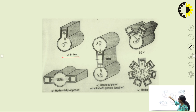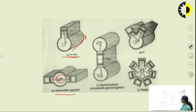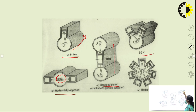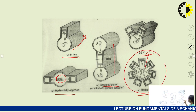In inline engines, a number of cylinders are arranged in a line. In a horizontally opposed engine, two pistons oppose each other horizontally. Vertically opposed pistons are arranged vertically. In a V engine, two cylinders are arranged making the shape of a V — we call it a V-shaped or V engine. In a radial engine, cylinders are arranged in a circle where each cylinder represents a radius of that circle.